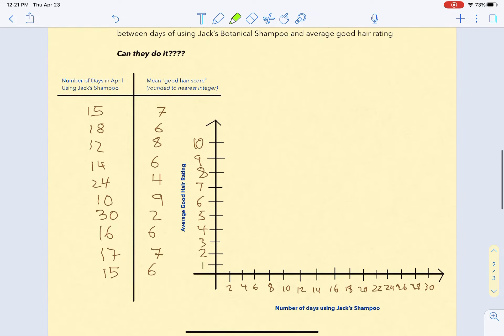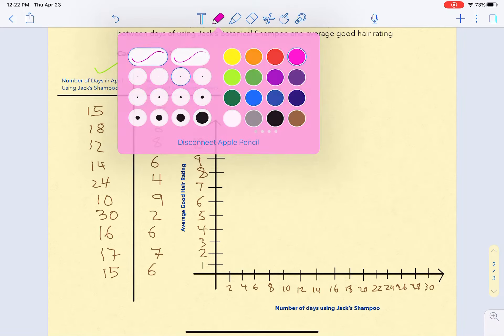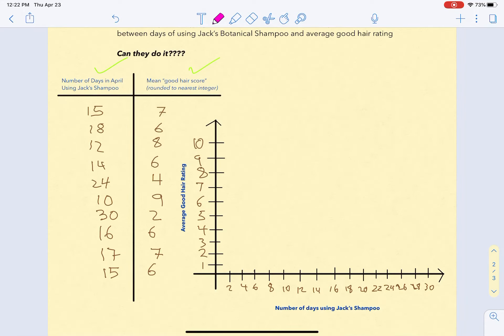The research company interviewed 10 people and collected data on the number of days using Jack's shampoo and the mean good hair score. Our job is to put this information on a scatterplot. It's very important to write down the labels on your axes.